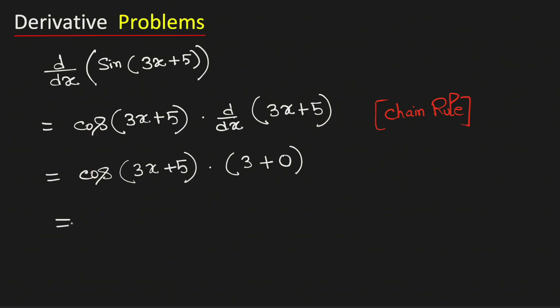Simplifying, we get the derivative of sine of 3x plus 5 is equal to 3 times cos of 3x plus 5. And this is our final answer.